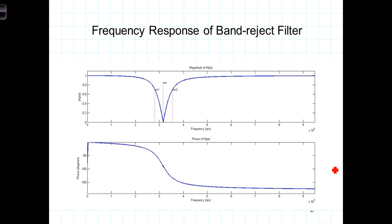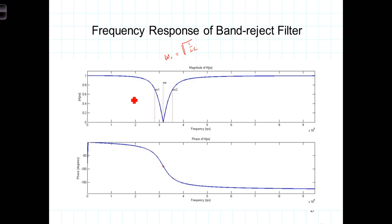The plot of the frequency response of the band reject filter shows maximum values of 1 at low and high frequencies. At that center frequency ω₀ = 1/√(LC), the frequency response goes to zero. You can see why it gets the name 'notch filter' — most frequencies are passed except for a narrow band of frequencies which are attenuated, and completely attenuated at the center frequency.